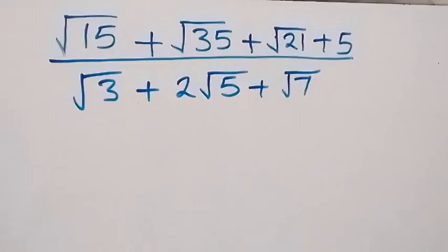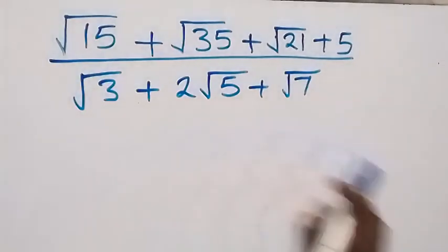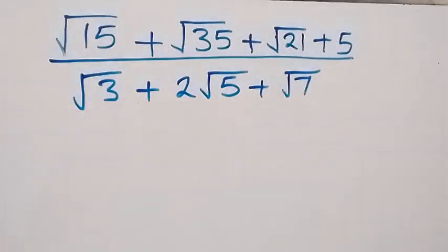Hello, you are welcome. How to solve this nice math problem involving roots. We have root 15 plus root 35 plus root 21 plus 5, all divided by root 3 plus 2 root 5 plus root 7.